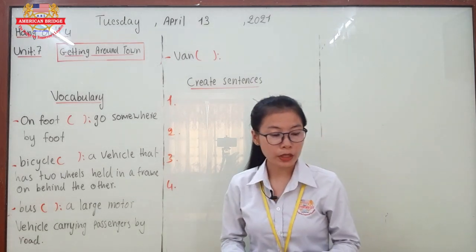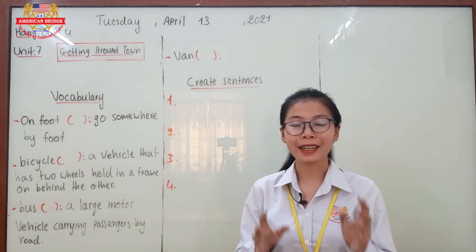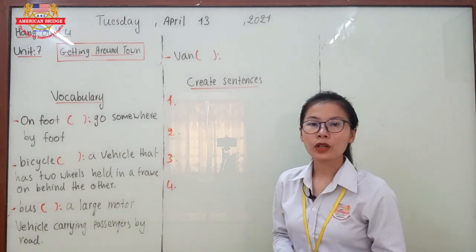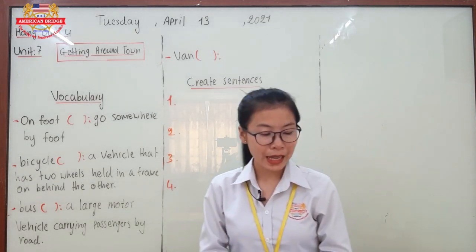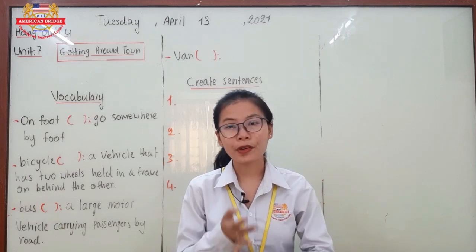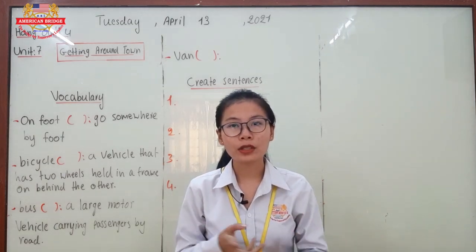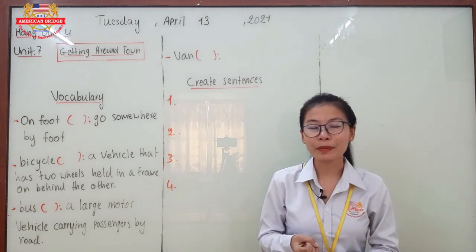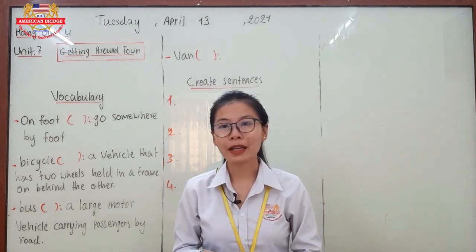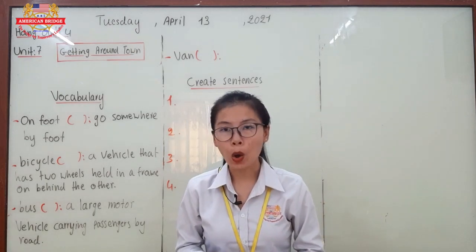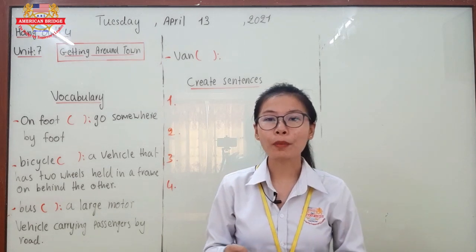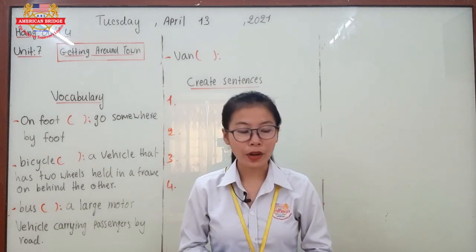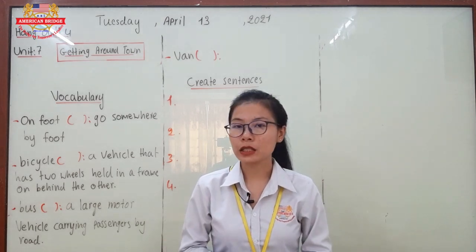We continue with the formal vocabulary in the second-stage vocabulary. In this one you have already learned four vocabulary words: ferry, taxi, motorcycle, and helicopter. Ferry refers to a boat or ship that carries passengers or goods and products from one country to another country.